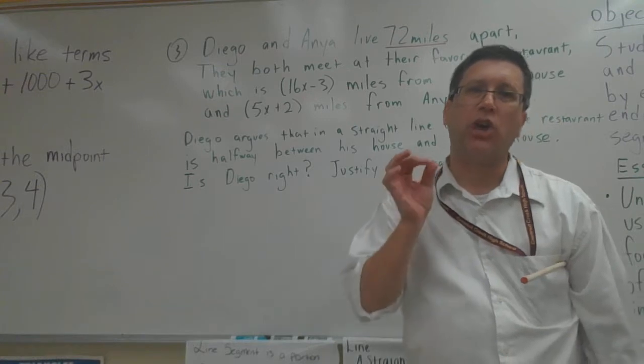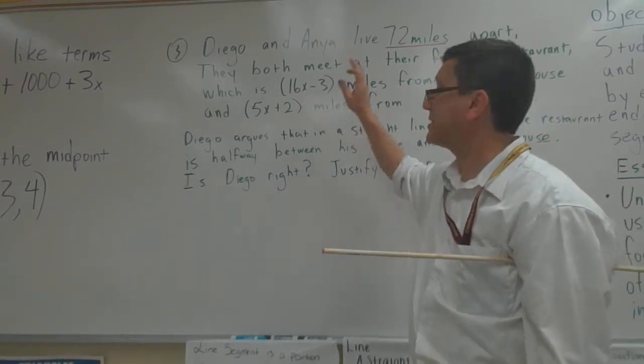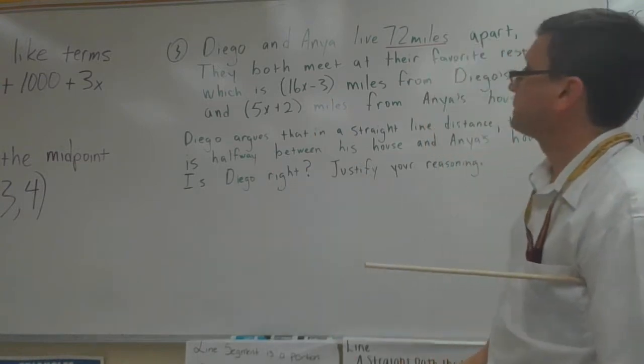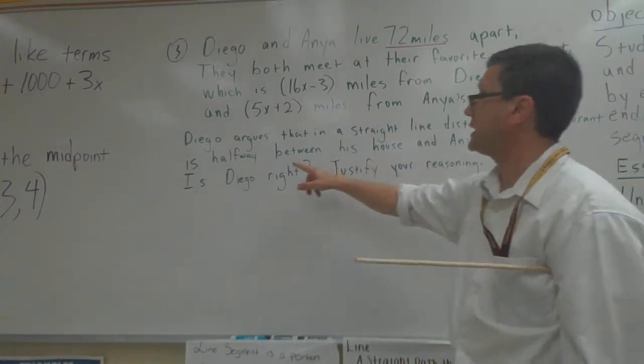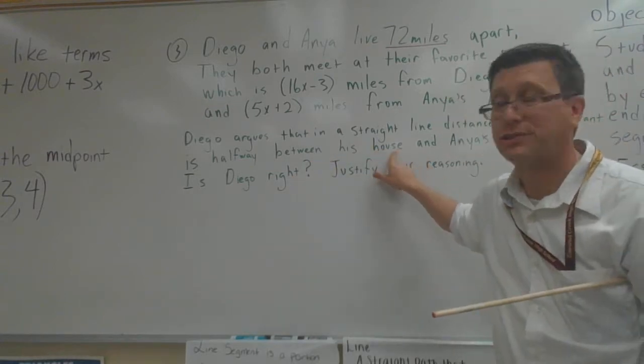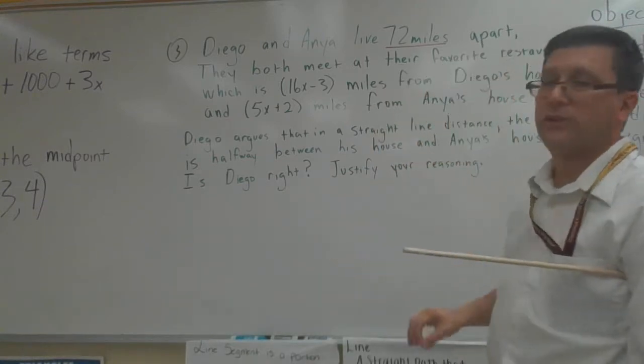We're talking about a restaurant and we're talking about a distance. This clearly says the distance. That says the distance. Diego argues that in a straight line distance, the restaurant is halfway between his house and Anya's house. Is Diego right? Justify your reasoning.